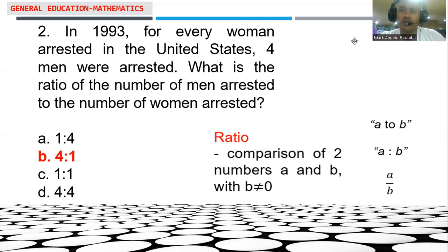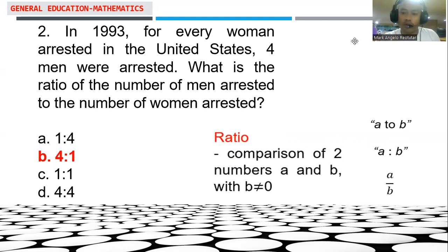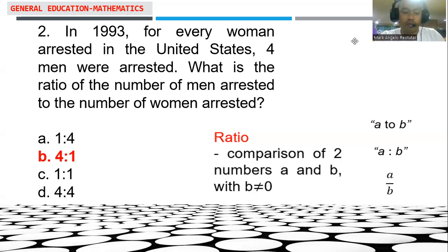We can denote ratio as a to b, or a is to b, or a over b, where a and b are both numbers. Note that b should not be equal to zero.